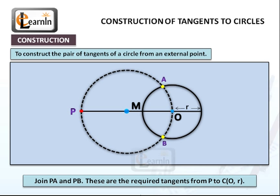Join PA and PB. These are the required tangents from P to C(O,r).